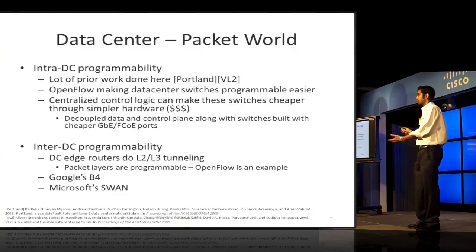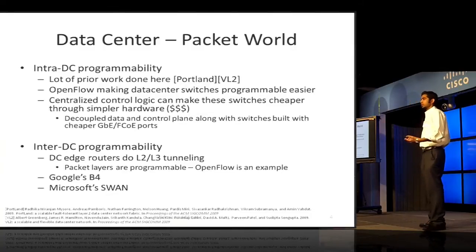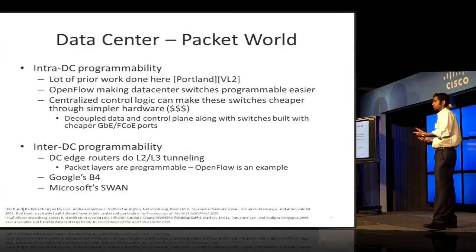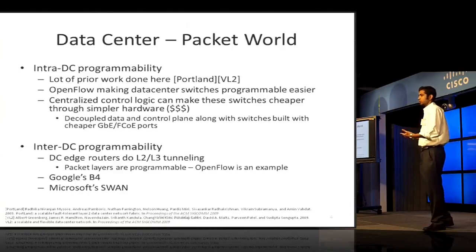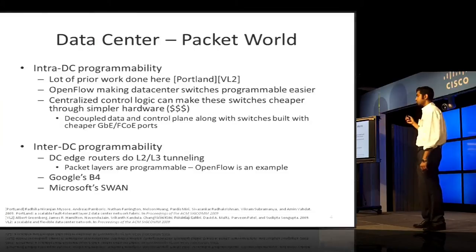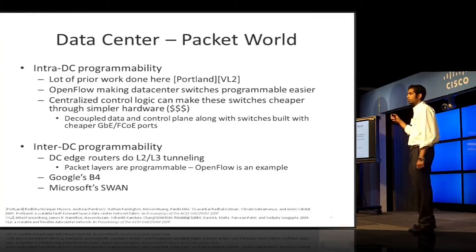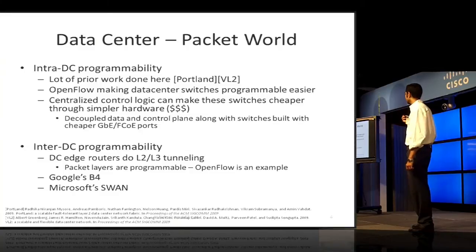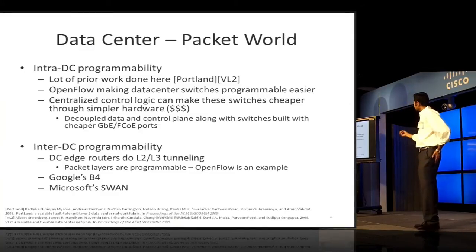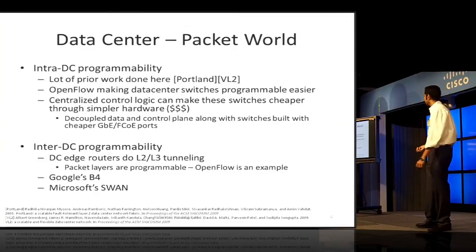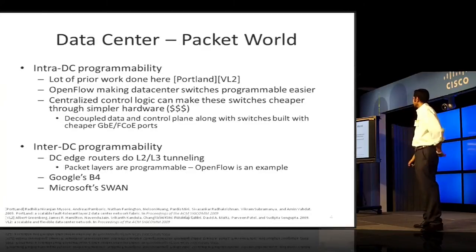Portland actually built something called the fabric manager, which is almost like a centralized controller. It was trying to solve the problem of a lot of MAC addresses being in flux because of all these virtual machines moving. They had some hierarchical structure to this otherwise flat L2, where some performance gains were achieved. And then with the advent of OpenFlow, these commodity Ethernet switches became more easily programmable — OpenFlow enabling that.